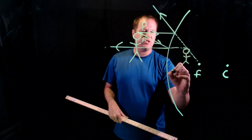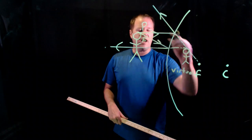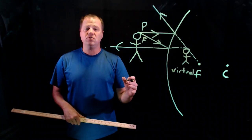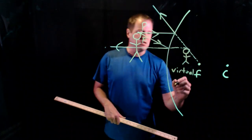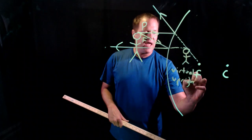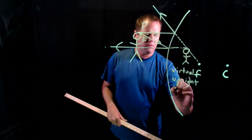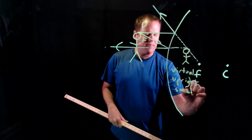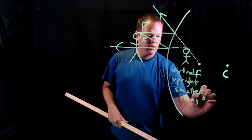This would be considered a virtual image because I drew dotted lines back to where the image appeared to be, not where the light rays actually went. It would be upright. And it looks like it's about half the size or so. So we can say smaller or demagnified. And that's our image.